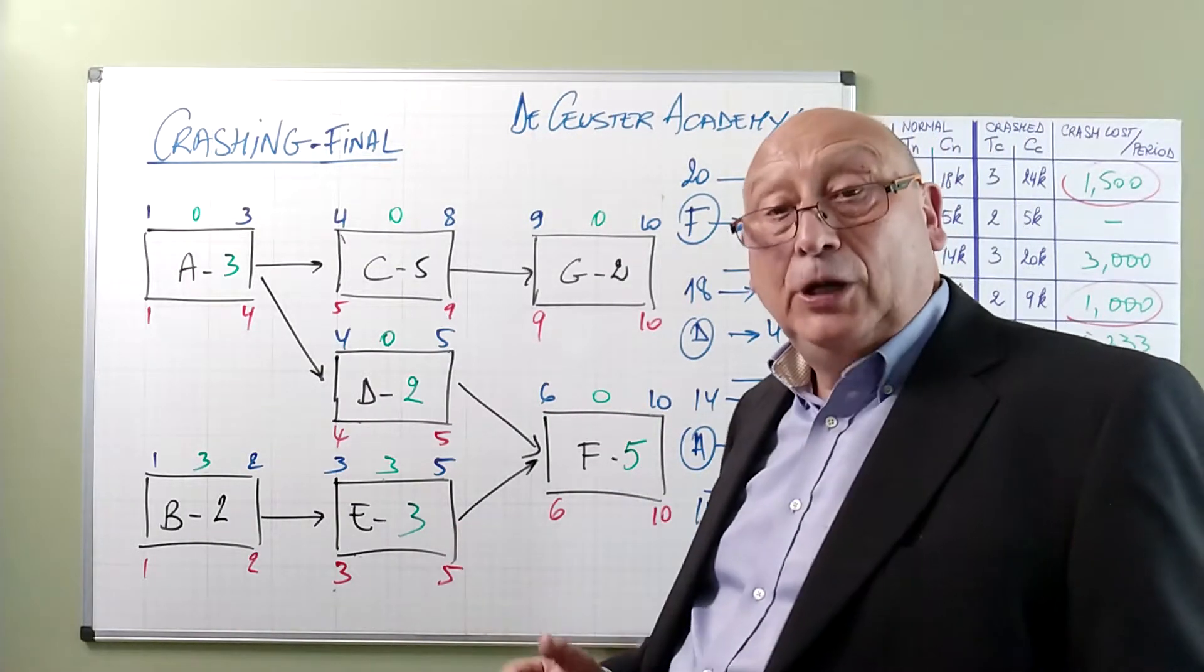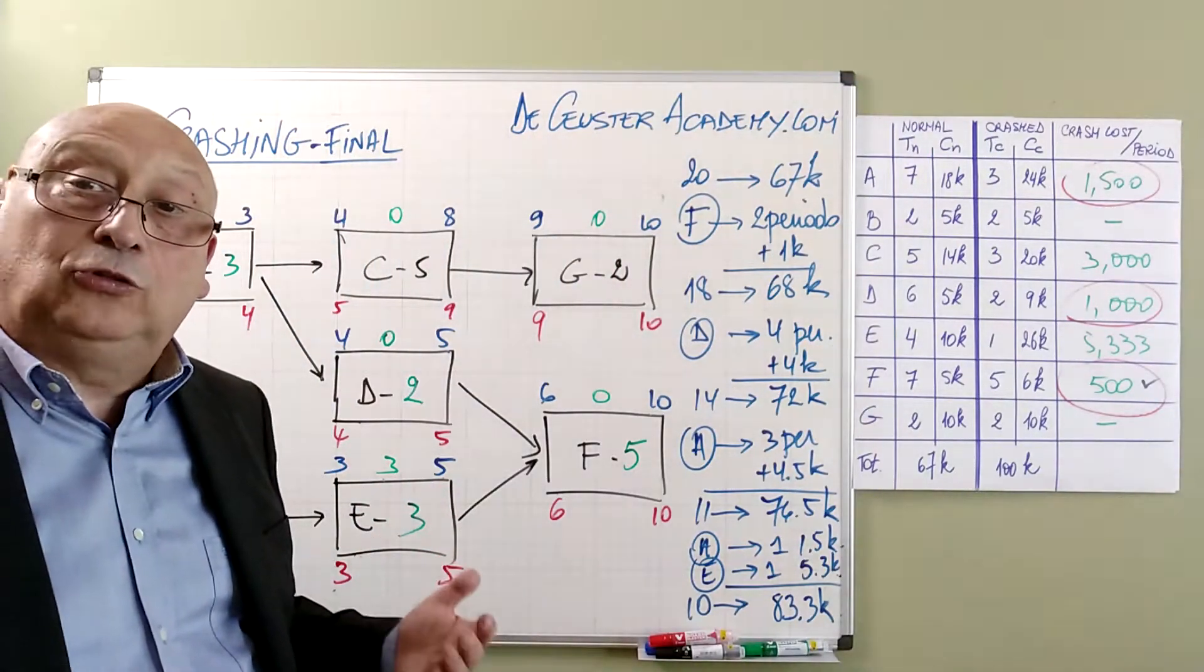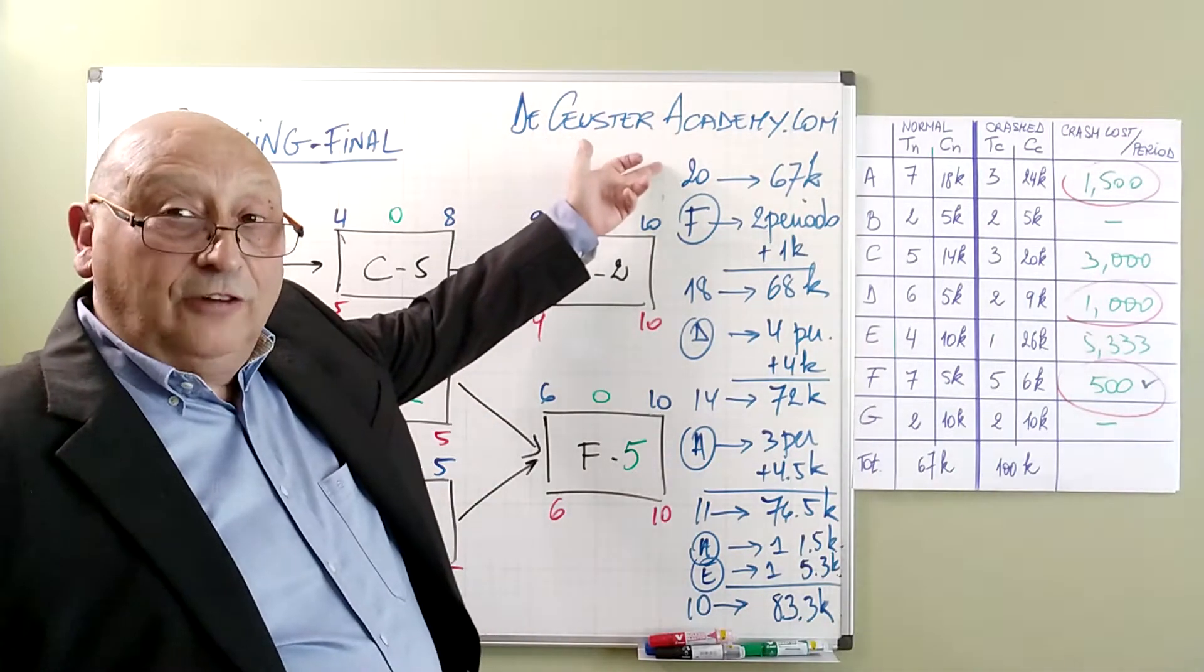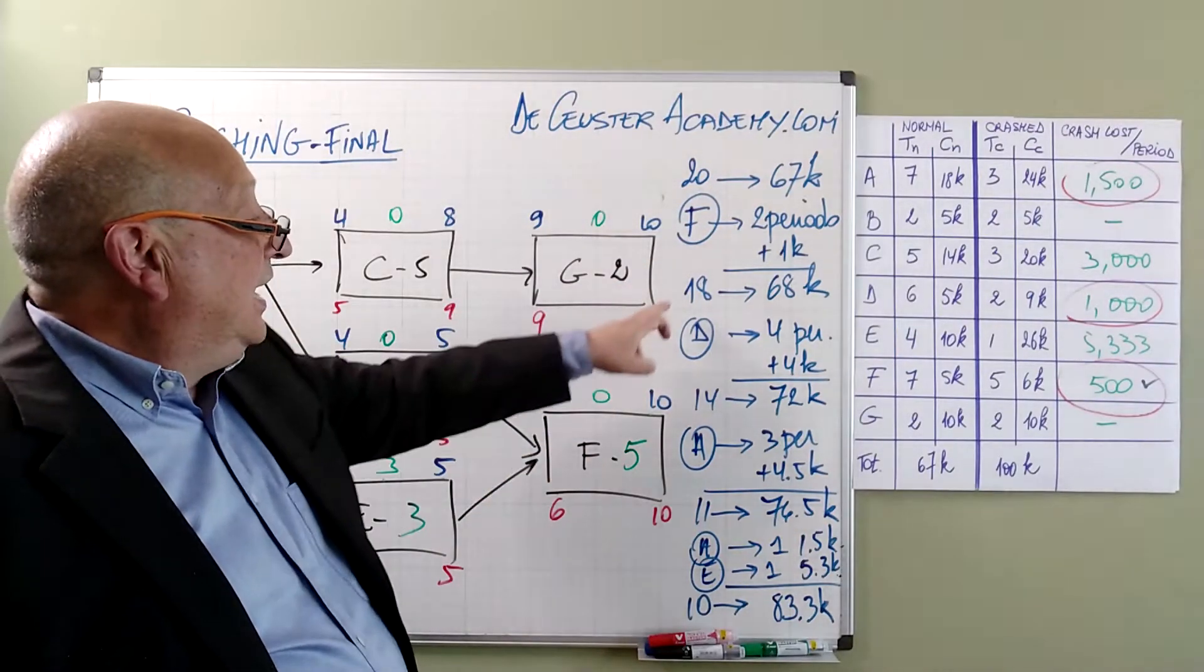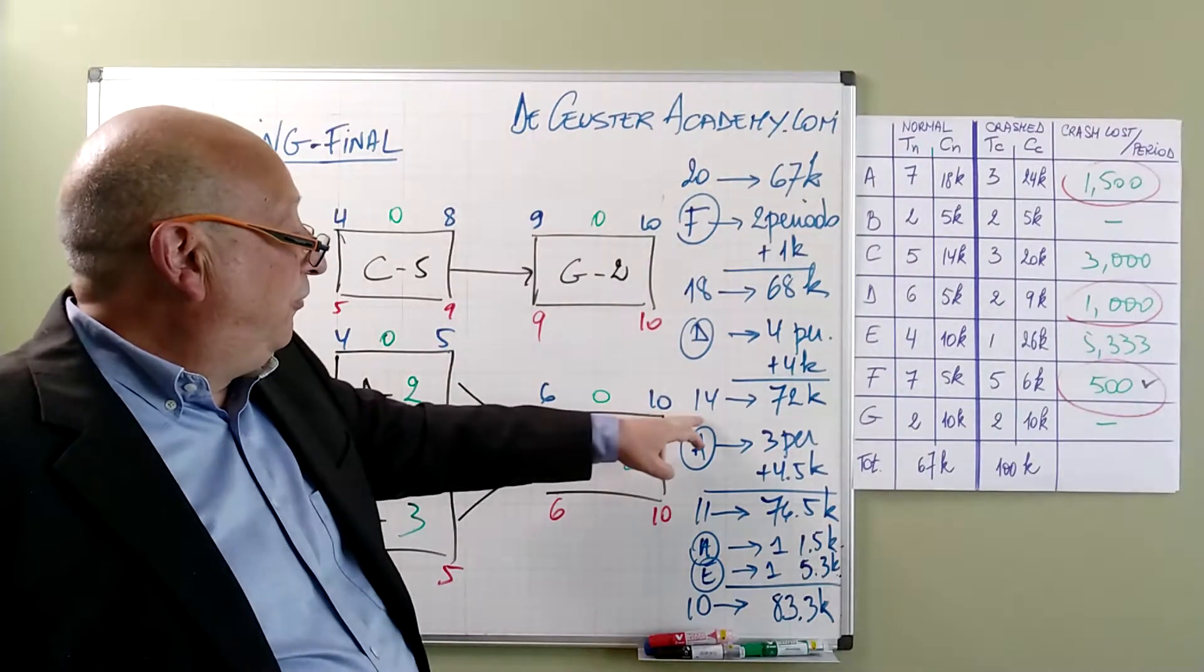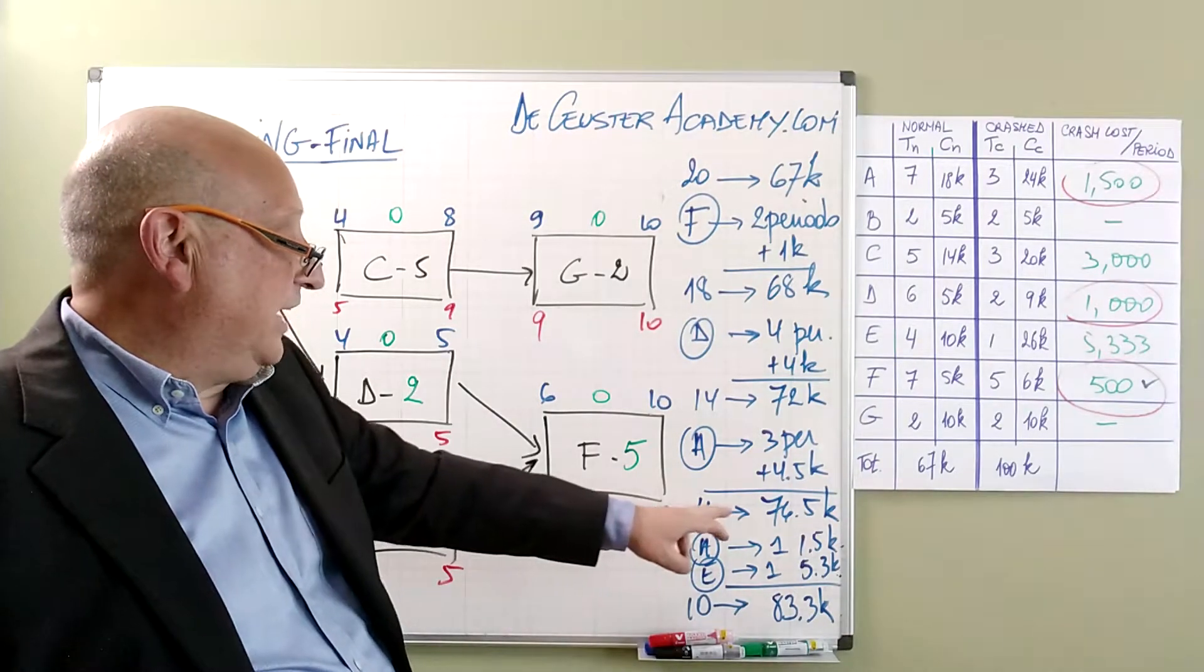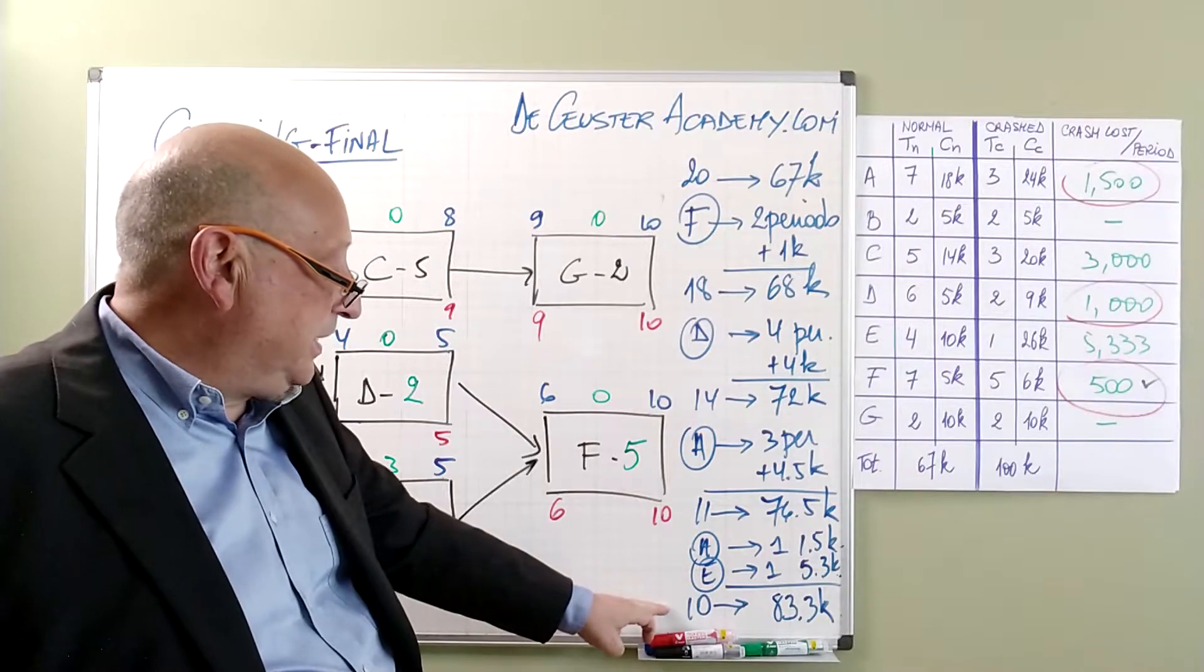In summary, we can say that the relationship that we have between the cost and the duration: a duration of 20 periods gives us a cost of 67K, 18 periods we have 68K, for 14 periods we have 72K, for 11 periods we have 76.5K, and for 10 periods we have 83.3K.